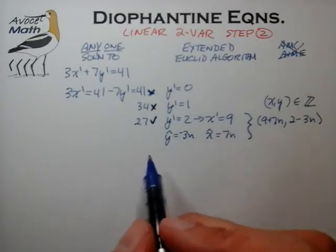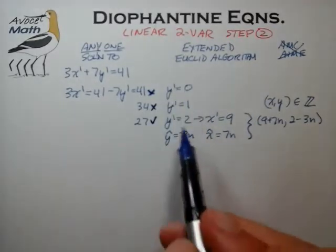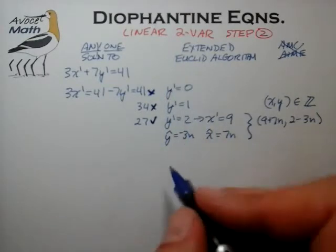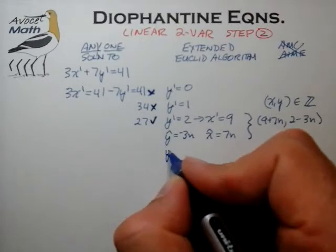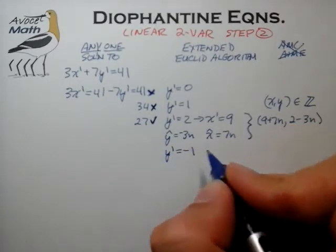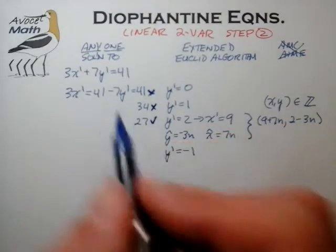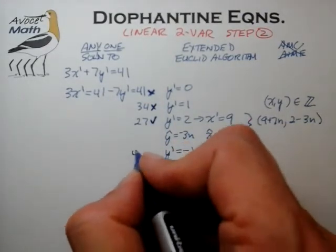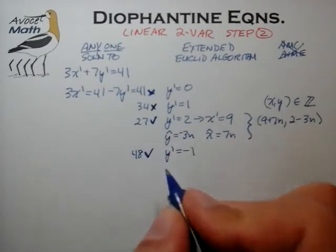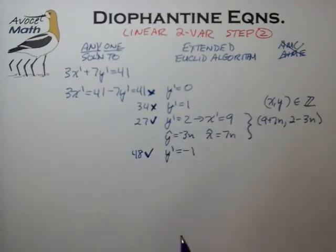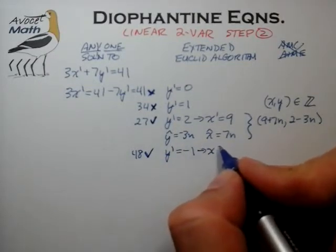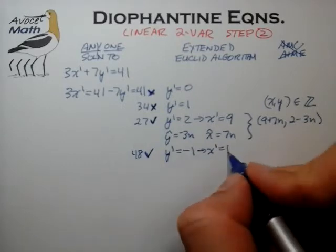A few comments: we could have guessed in the other direction, choosing negative values for y'. For example, if we guess y' = −1 and plug that back in, the right-hand side becomes 41 + 7 = 48, which is also a multiple of 3. That is a valid solution as well, leading to x' = 16.